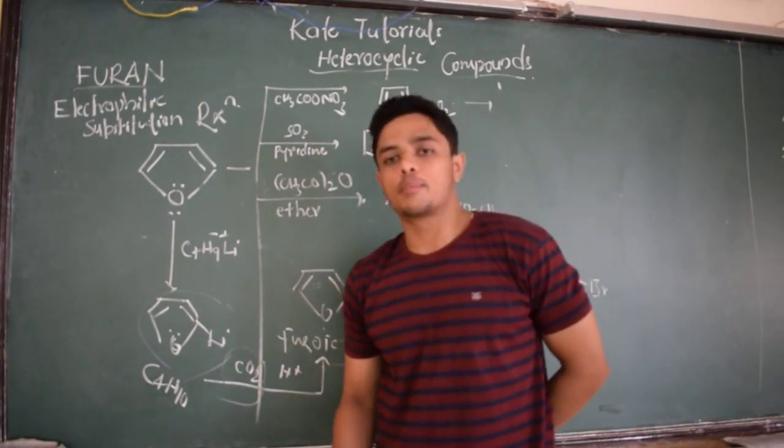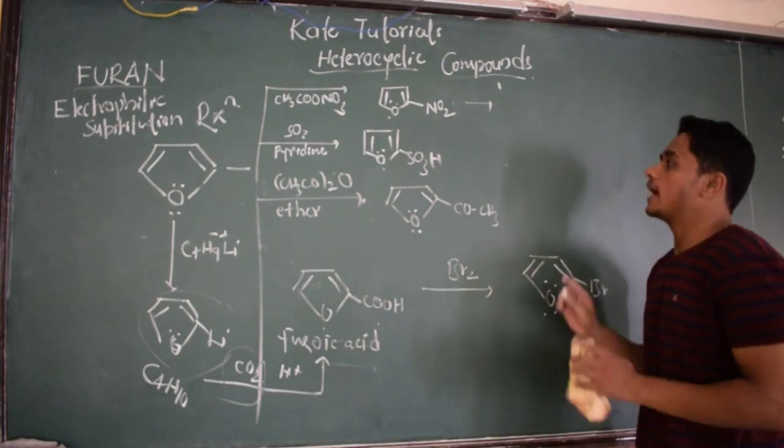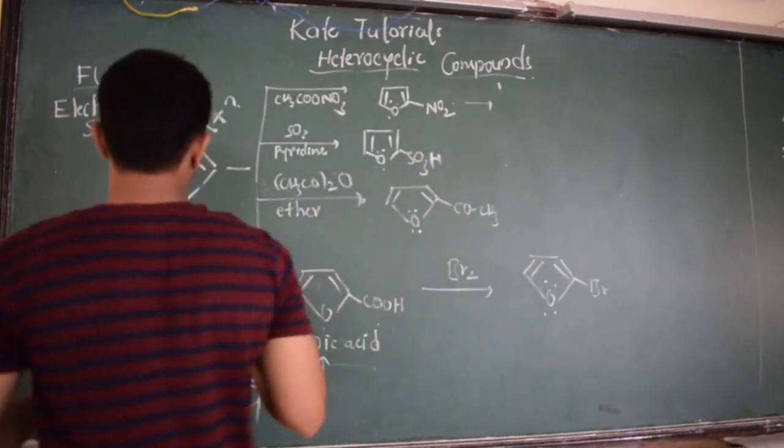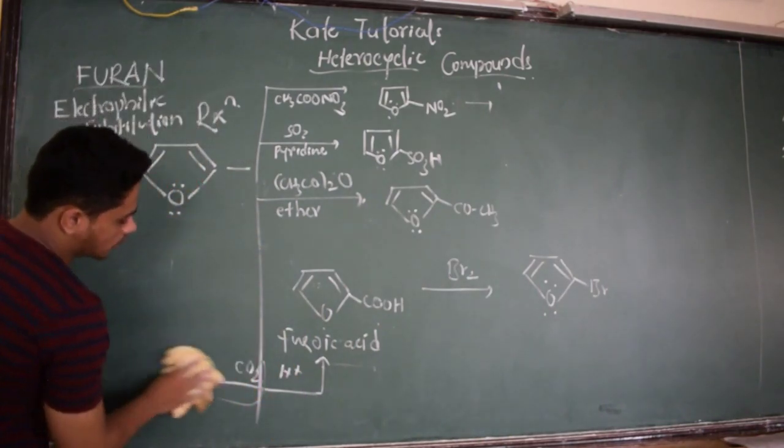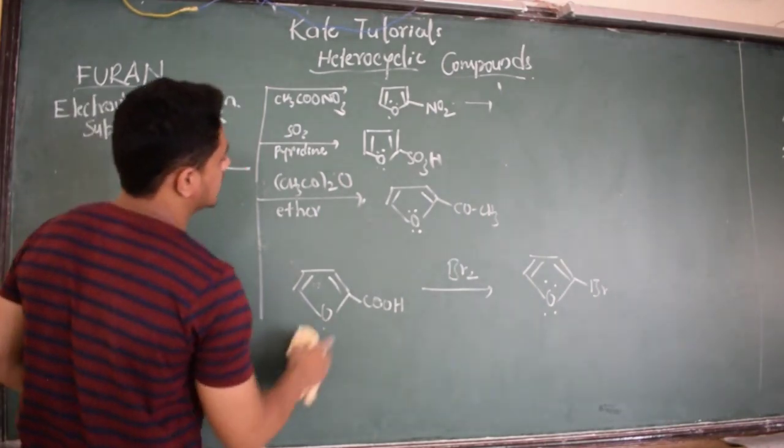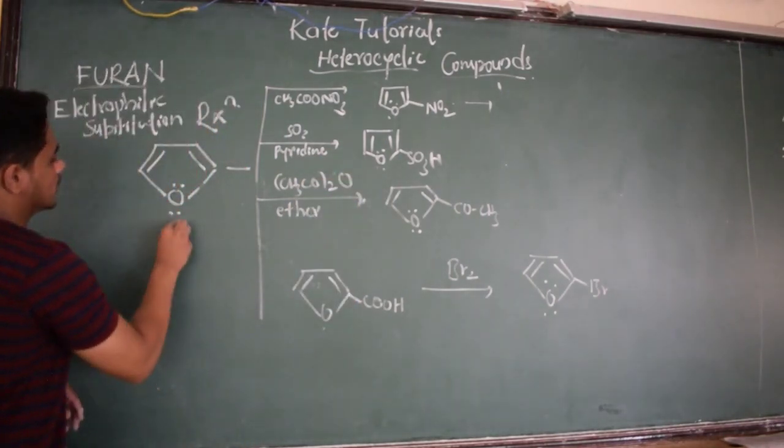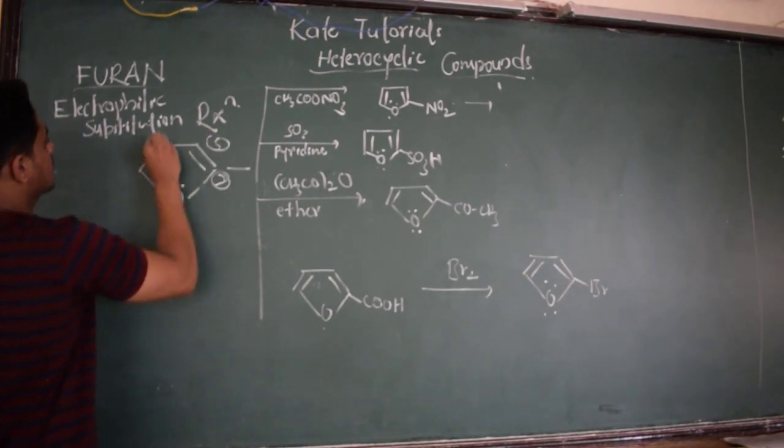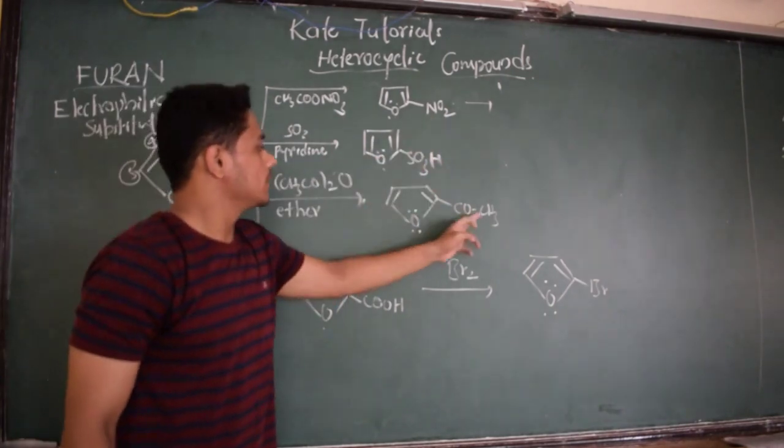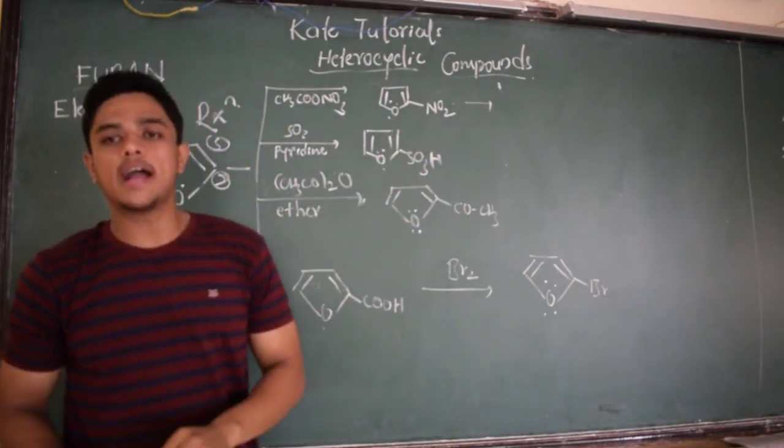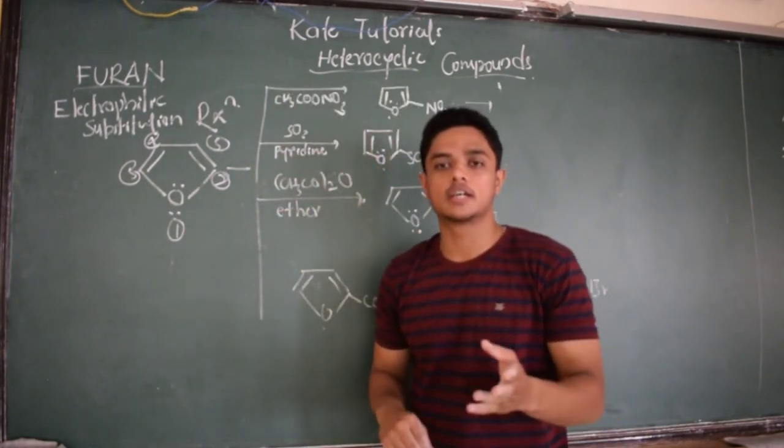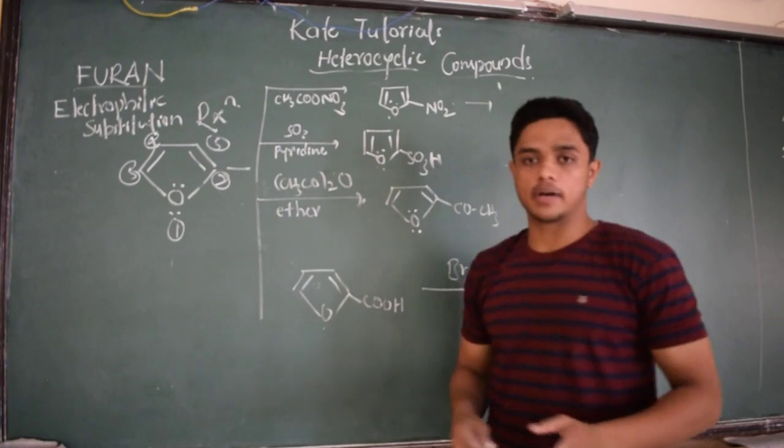This is about electrophilic substitution reaction. But I don't know whether you observed or not - all these electrophiles, nitrate group or sulfonic group, everything attacked to the second position. This is first, second, third, fourth, and fifth. See, all these groups attached to the second position. Why is it so? Why did they attach only to the second position, why not third or any other number?